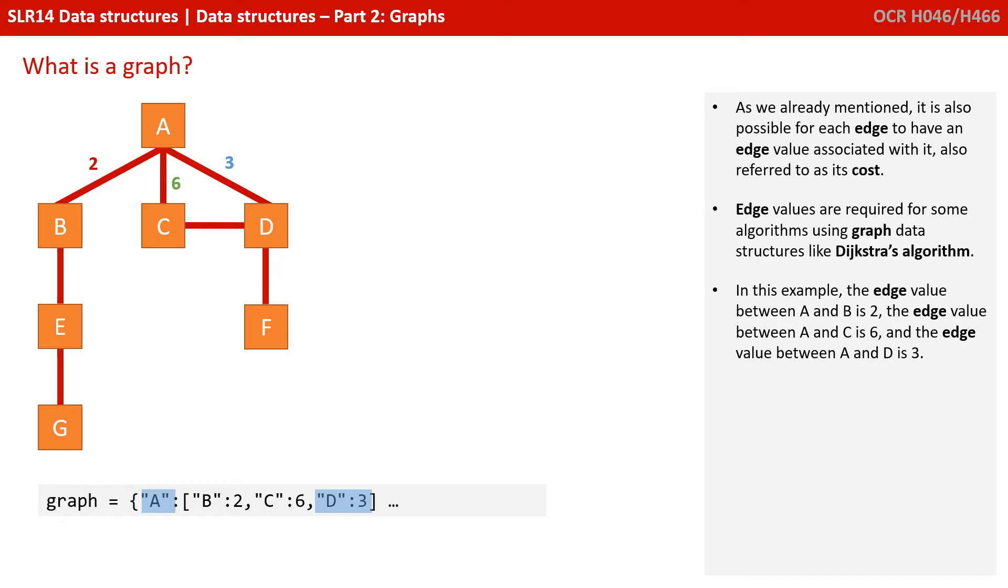In this example, the edge value between A and B is 2, the edge value between A and C is 6, and the edge value between A and D is 3.